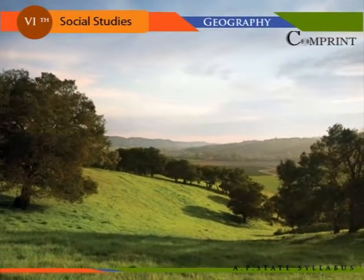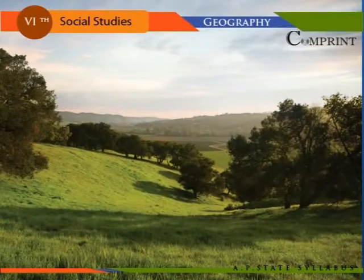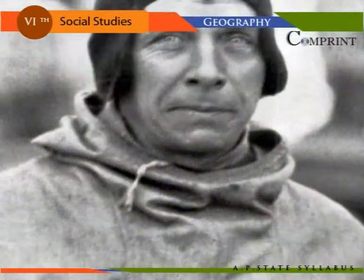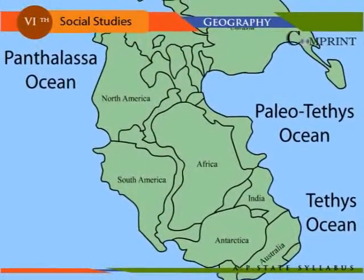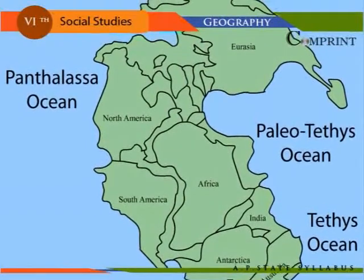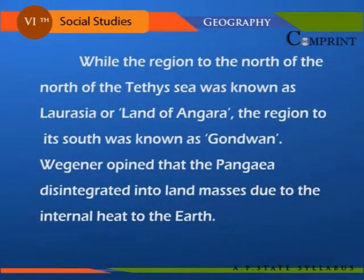Primary Landforms. The Earth comprises of 29% land and 71% water. The area of the Earth above the sea level is known as land. According to the theory of continental drift proposed by Alfred Wegener, the land was once one united unit. It was known as Pangaea and was surrounded by the Panthalassa Ocean. The region to the north of the Tethys Sea was known as Laurasia or the land of Angara, while the region to its south was known as Gondwana. Wegener opined that the Pangaea disintegrated into land masses due to the internal heat of the Earth.